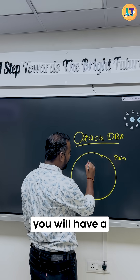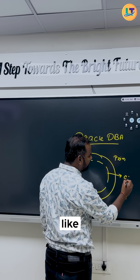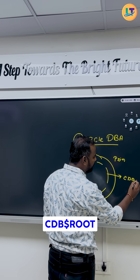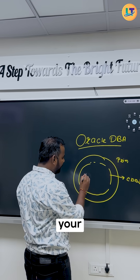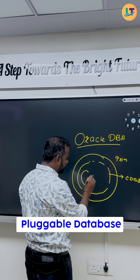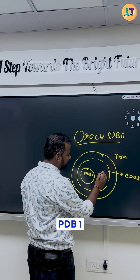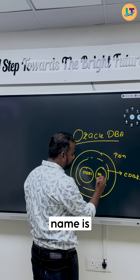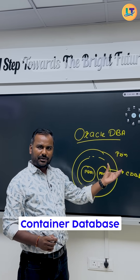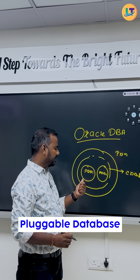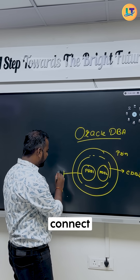Under this container database you will have a root container, and that root container will be called cdb$root. Under this root container you will have your pluggable databases — let's say pluggable database pdb1 and pluggable database pdb2. So under one container database you can have multiple pluggable databases.